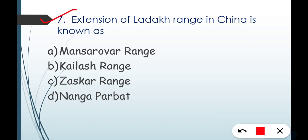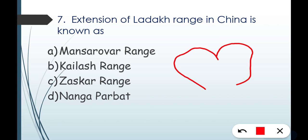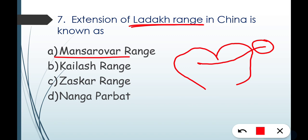Question number seven: the extension of Ladakh Range in China is known as what? Options are Mansarovar Range, Kailash Range, Zanskar Range, and Nanga Parbat. The correct answer is Option B — Kailash Range. The Kailash Range is the extension of the Ladakh Range into China.